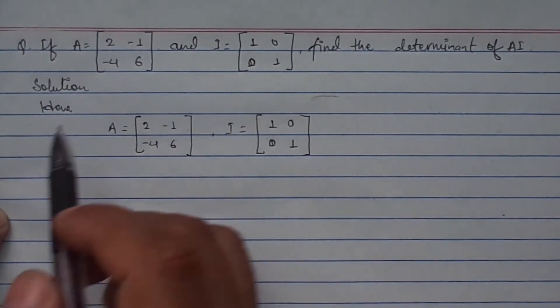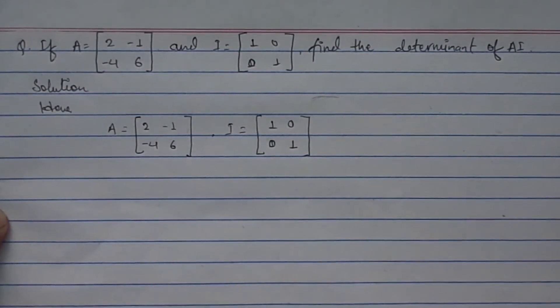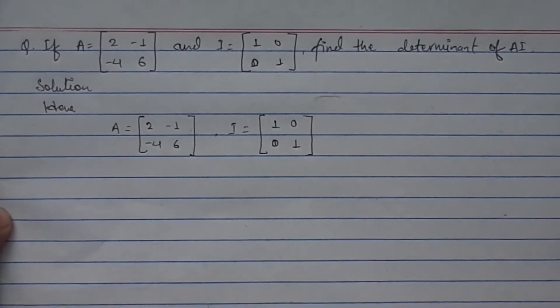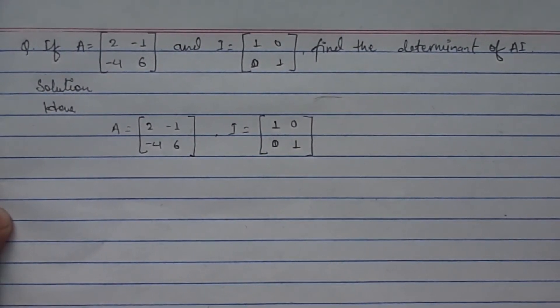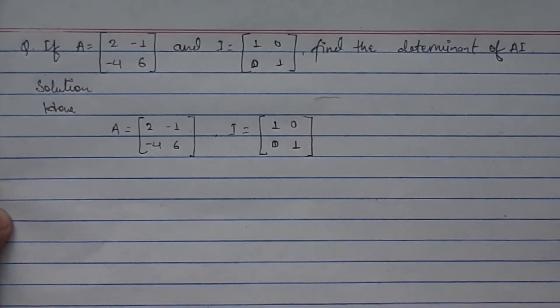We're going to do the solution. The question is: if A equals to [2, -1; -4, 6] and I equals to [1, 0; 0, 1], find the determinant of AI.